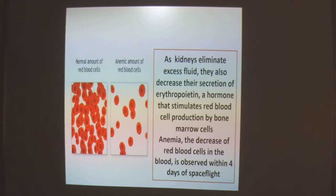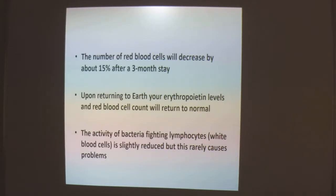As the kidneys eliminate excess fluid, they also decrease their secretion of erythropoietin, a hormone that stimulates RBC production by bone marrow. This results in anemia — a decrease in RBC count in the blood — which is observed within the first 4 days of space flight. The number of RBCs will decrease by about 15% after a 3-month stay. Upon returning to Earth, erythropoietin levels come back to normal and RBC count improves. Activity of bacteria-fighting lymphocytes is slightly reduced but rarely causes any problems.